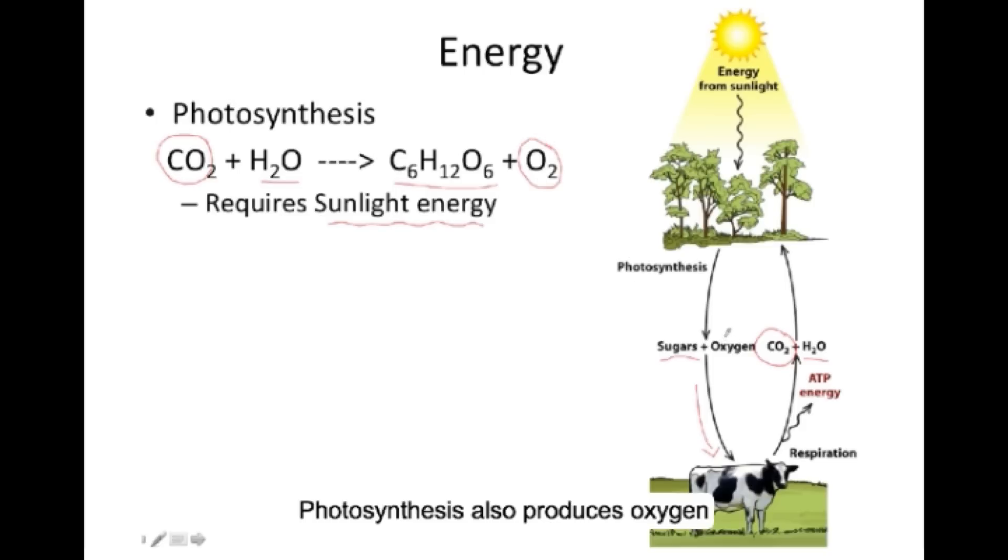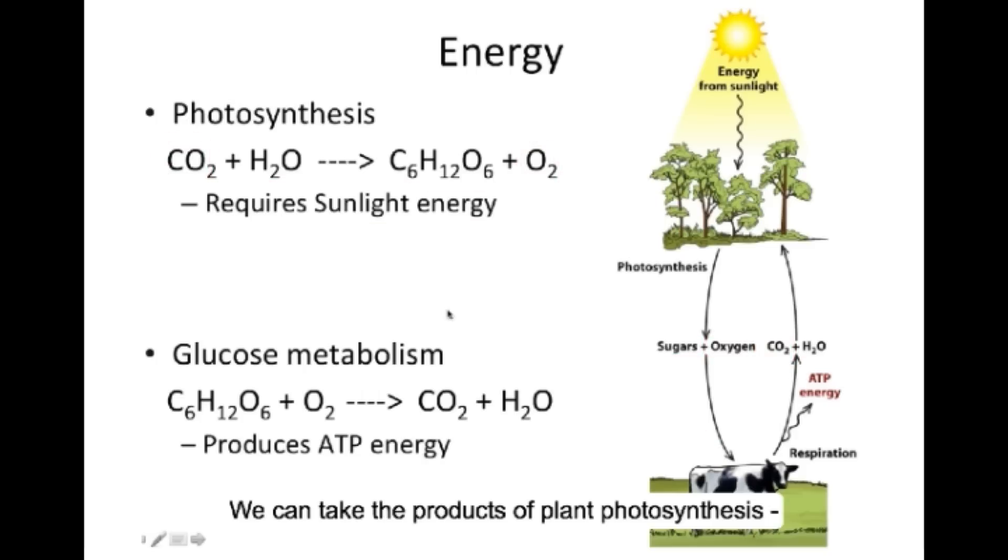Photosynthesis also produces oxygen, which most organisms need to survive. We and the animals that we eat are all dependent on this process. We can take these products of plant photosynthesis, that is, the glucose and oxygen, and through the metabolic process of respiration, produce carbon dioxide, water, and most importantly for us, large amounts of energy in the form of ATP.